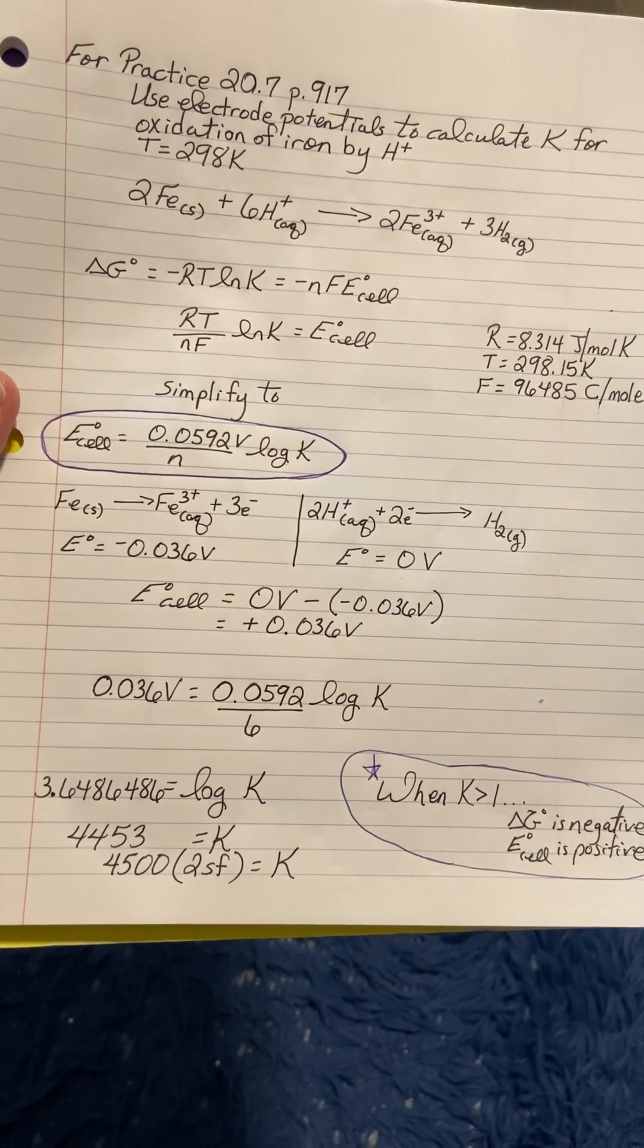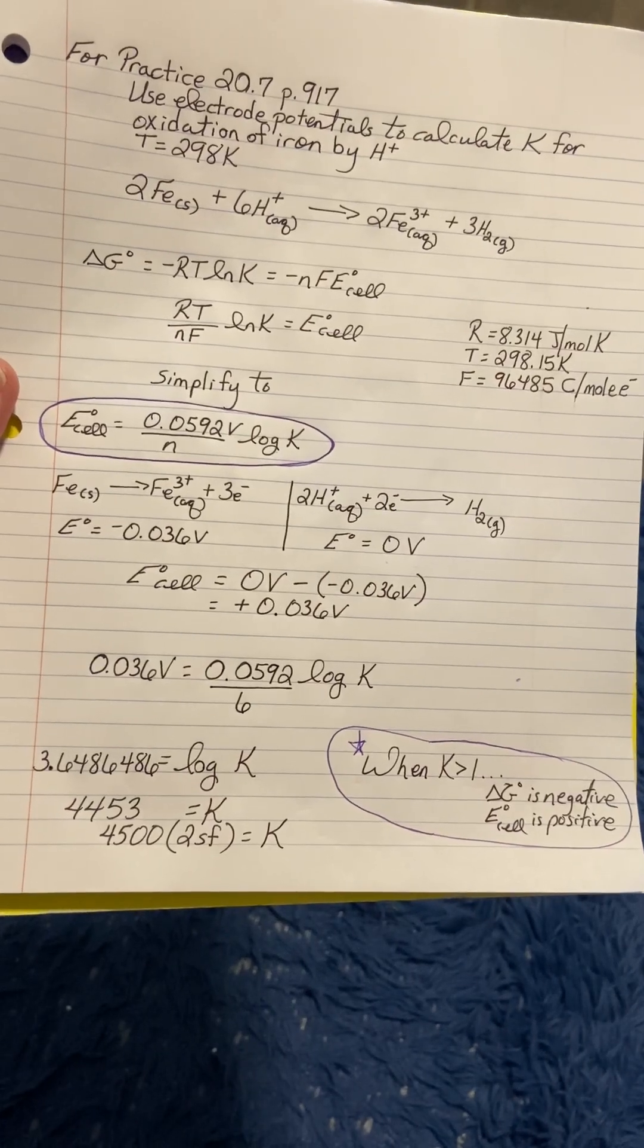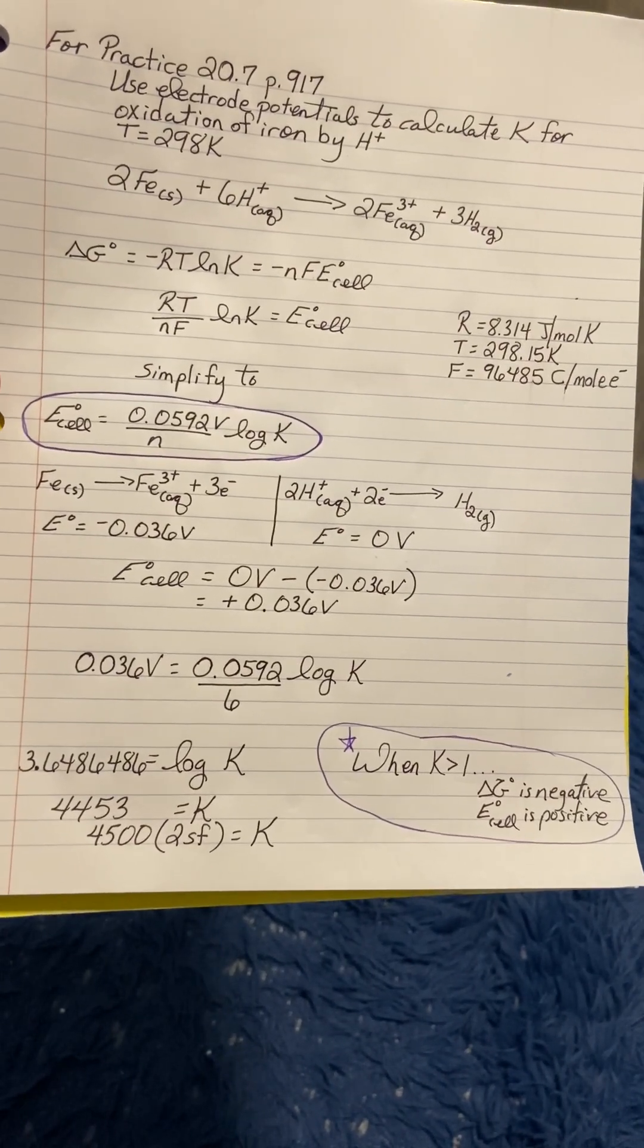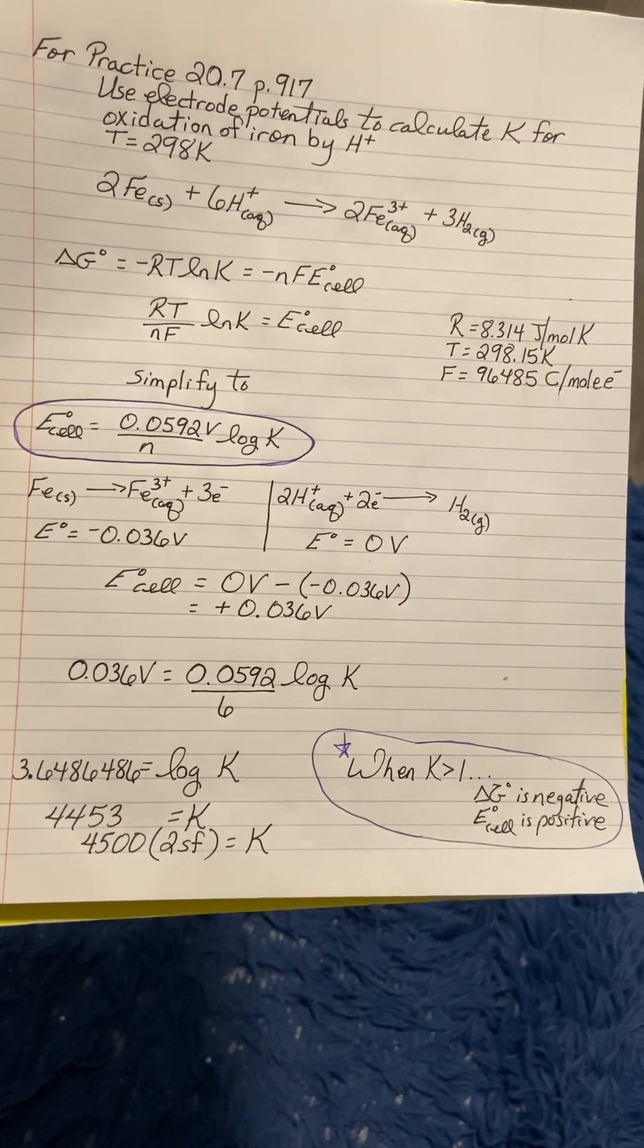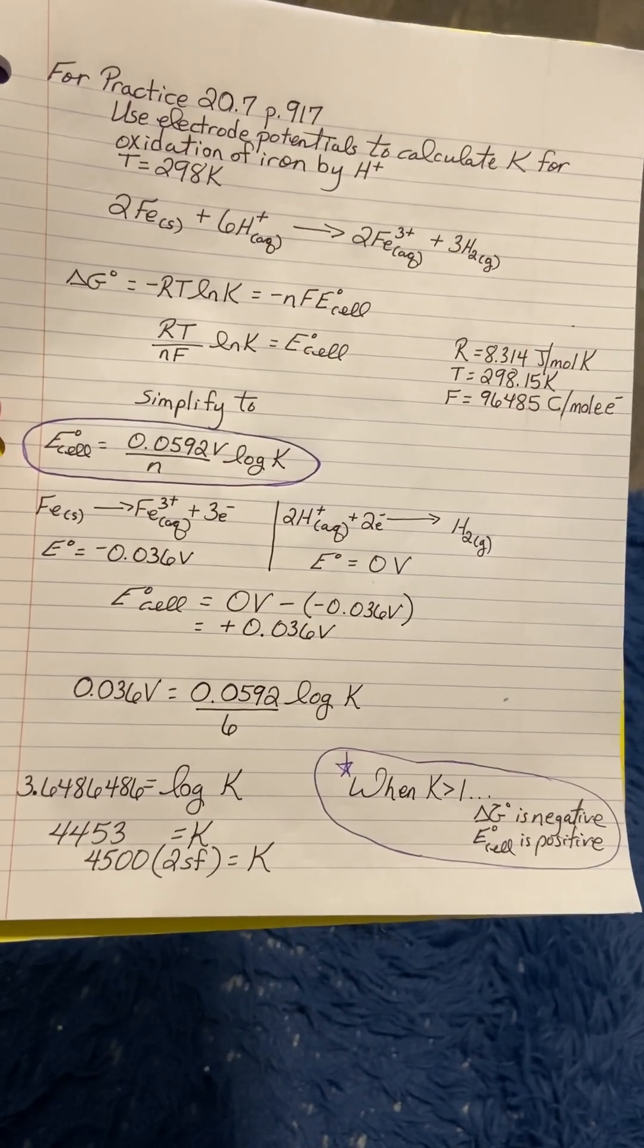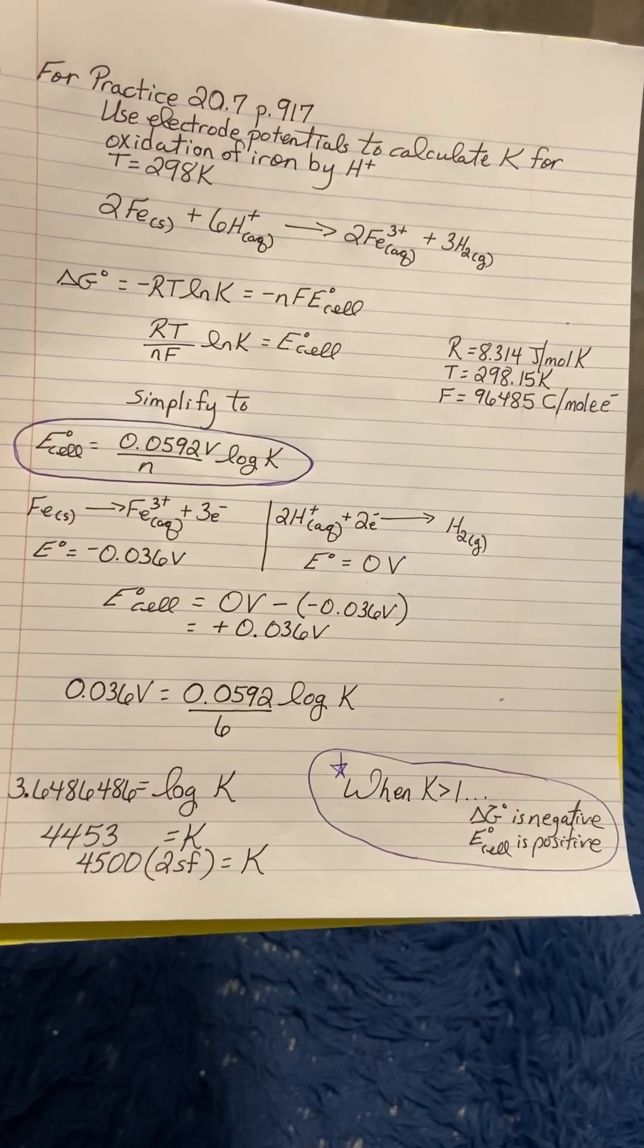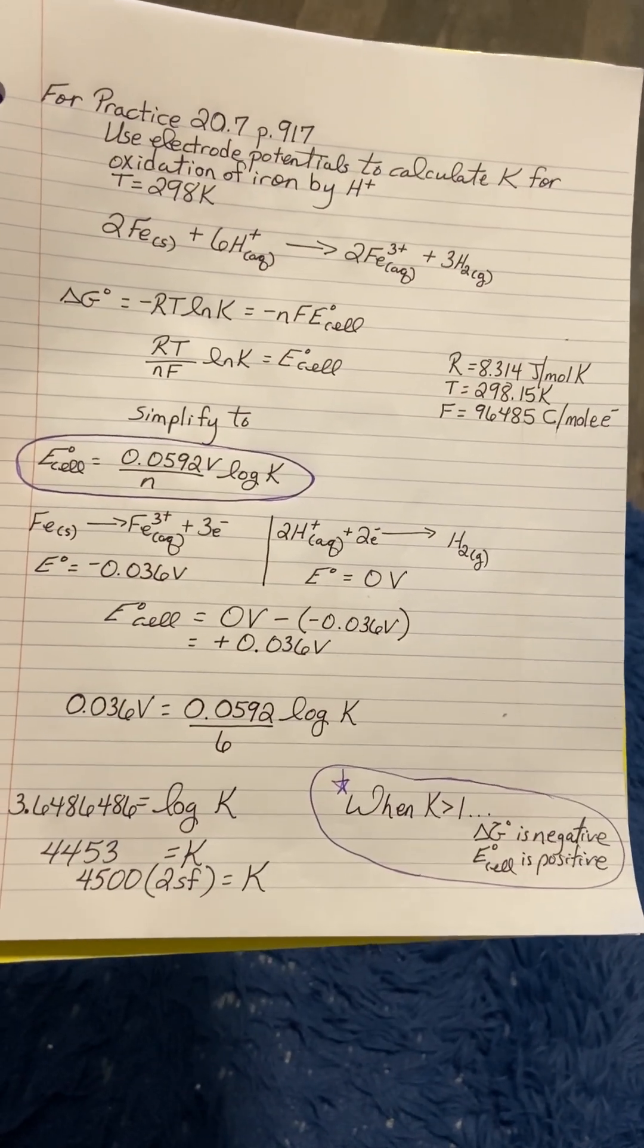Now when K is greater than one, your Gibbs free energy value is going to be negative and your E_cell is going to be positive. Those two values will relate to the spontaneity of the reaction. When delta G is negative it's spontaneous, when E_cell is positive it is spontaneous. So this process is spontaneous.